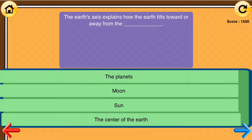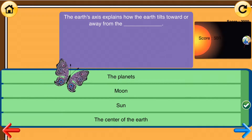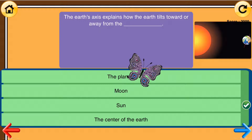The Earth's axis explains how the Earth tilts toward or away from the blank: the planets, moon, sun, or the center of the Earth? The answer is the sun.